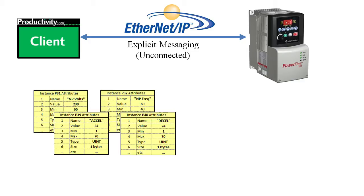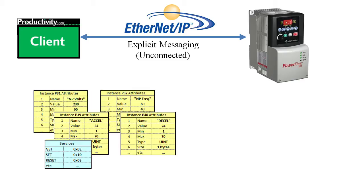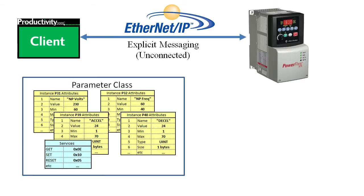Now what can you do with these attributes? You can get the value, set the value, reset the value, etc. We call those services — all the things you can do to this common set of objects. Since all these instances of this common template or object share a common set of attributes and services, we group them together into a common class of objects. We call this the parameter class.